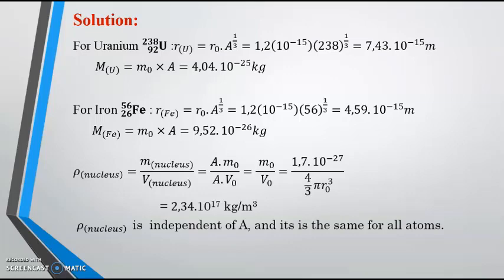Density is equal to mass of the nucleus over volume of the nucleus, equal AM0 over AV0, equal M0 over V0. And you can conclude that the density is equal to 2.34 times 10 to the power 17 kg per meter cube. This is a direct application. It shows that nucleus density is independent of A and it is the same for all atoms or for all nuclei.